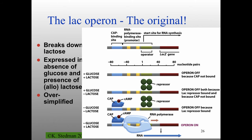In the lac operon experiments, everything was done in the absence of glucose — they had no idea there was other regulation. When you grow in the presence of glucose, you have no cyclic AMP, so CAP does not bind DNA and there's no expression. In the absence of glucose, as Jacob and Monod were using, CAP binds, the repressor is absent, and you get expression of the operon — a nice example of combinatorial control.